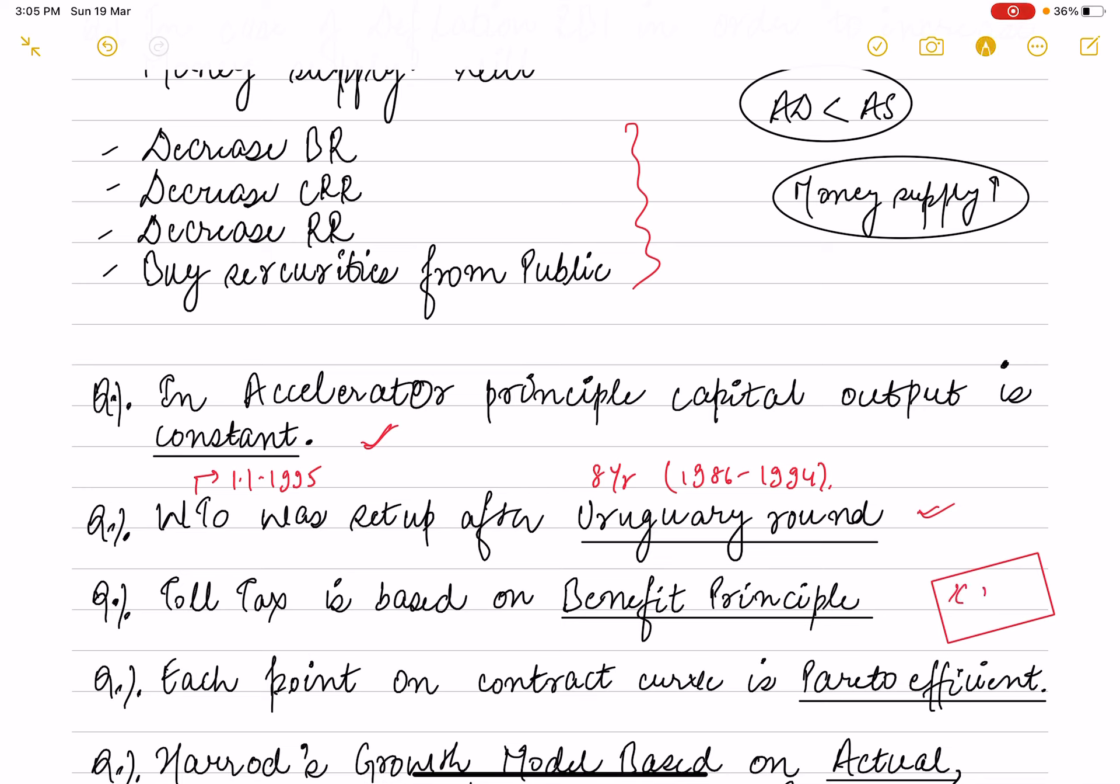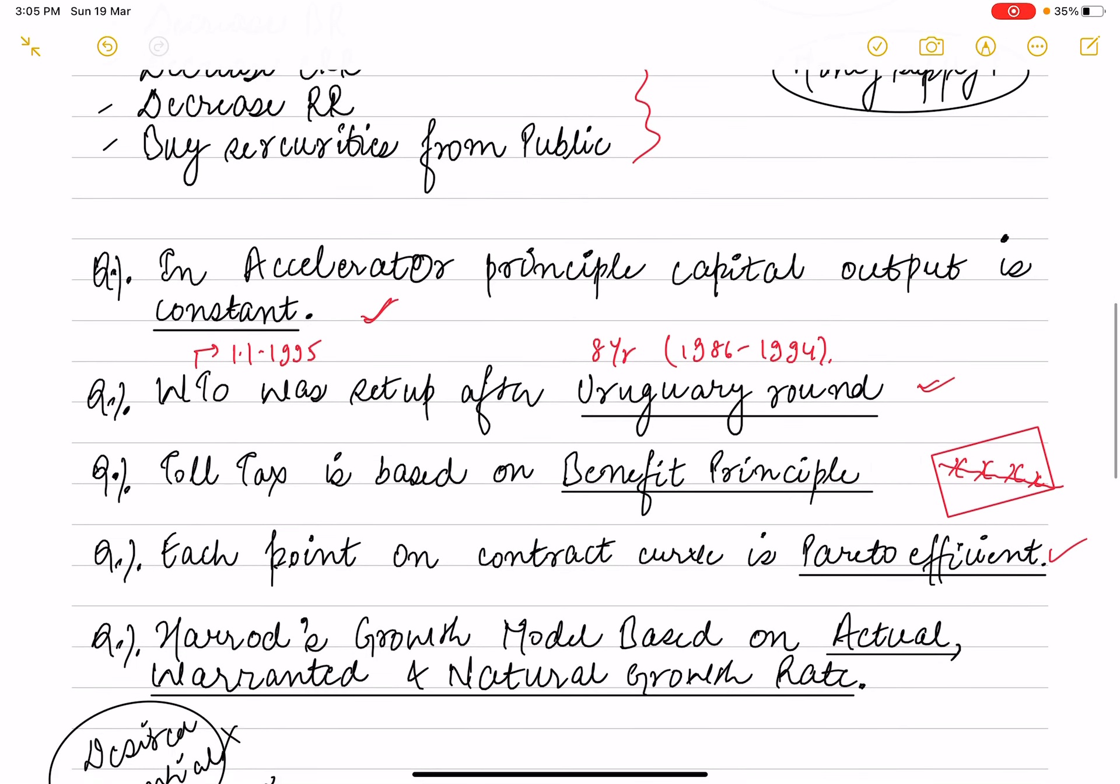Next question is, each point on contract curve, they are all Pareto efficient. All these points are Pareto efficient, so that's the correct option.